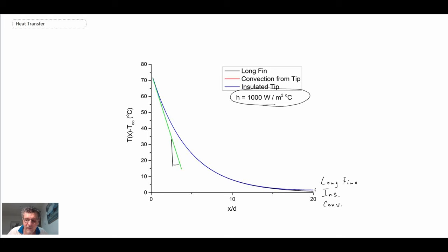And so with the higher convective environment, we have a scenario where all three solutions are very similar to one another. This slope is dT by dx at x equals zero. And again, we can determine the heat being withdrawn from the fin using the slope at the base at x equals zero.